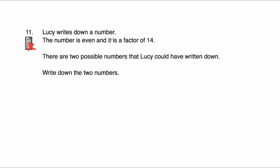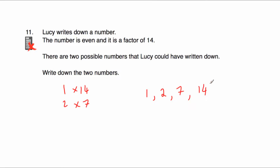Question number 11 says: Lucy writes down a number and the number is even and it is a factor of 14. The factors of 14 are 1, 2, 7, and 14. The number is even, so it could be 2 or 14, because 1 and 7 aren't even. The question says there are two possible numbers Lucy could have written down — they are 2 and 14, as both are even and factors of 14.